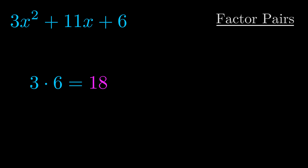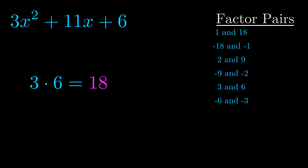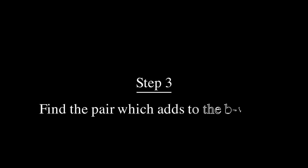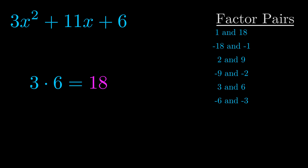Okay, here's what I came up with. Now once you have these factor pairs, the goal is to find which of these pairs adds to the b value. The b value is the coefficient on the x term — that's the middle term, the one that we haven't done anything with yet.